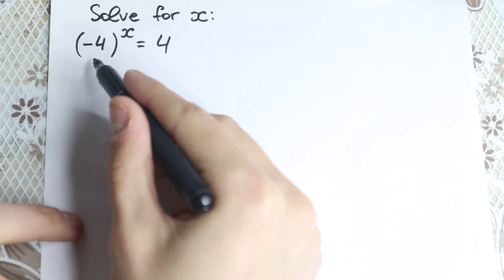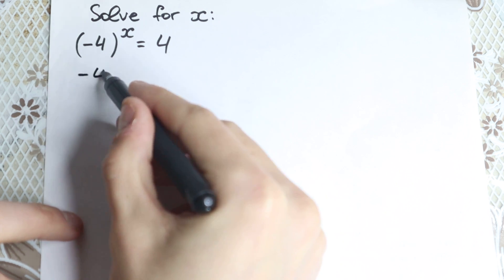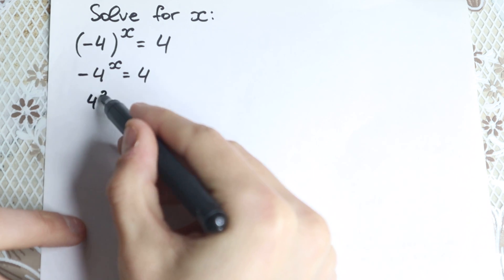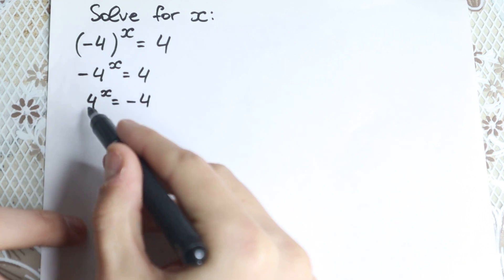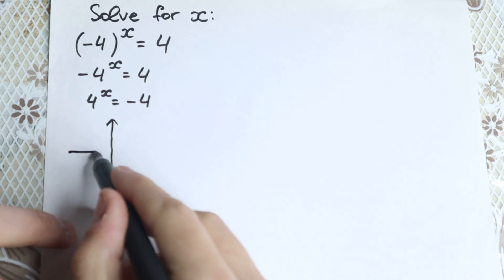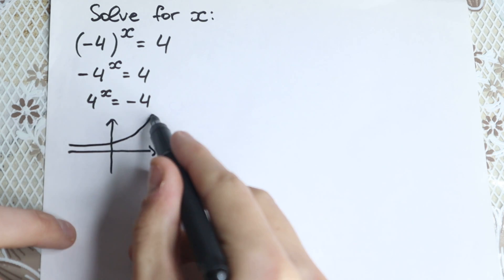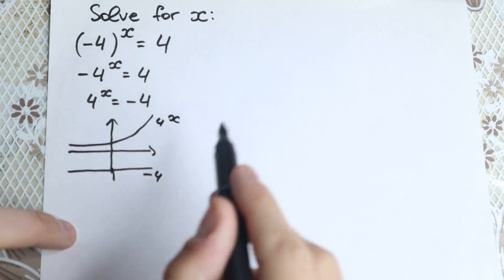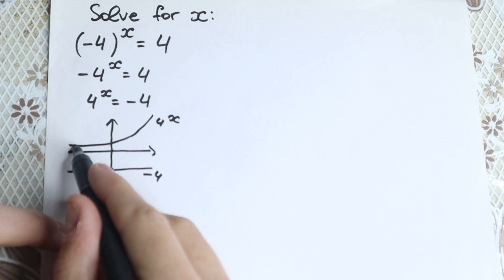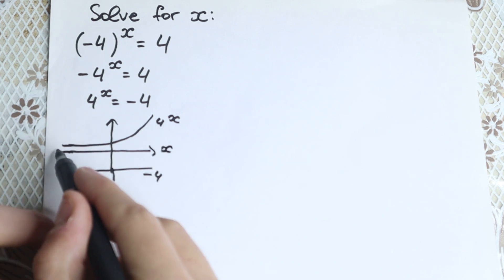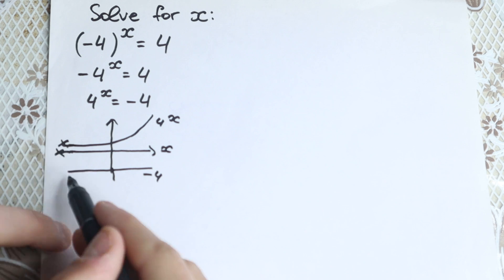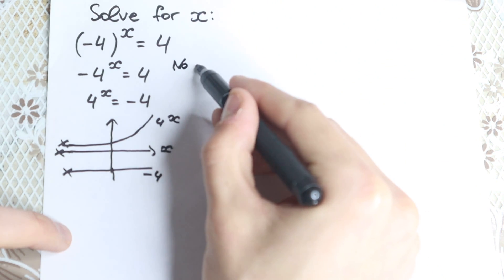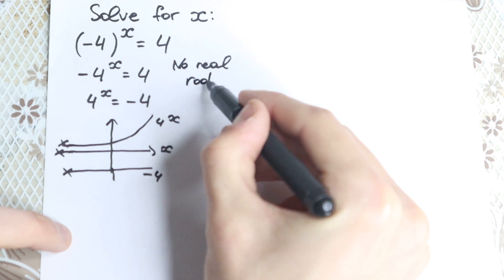Let's start with an interesting explanation. If we don't have any parentheses — so if we have minus 4 to the power x equals 4 — then multiplying by minus 1, we get 4 to the x equals minus 4. This is an exponential function, so we can draw the graph quickly. The curve 4 to the x never reaches minus 4, which is below zero, so there is no point of intersection. This tells us there are no real roots.